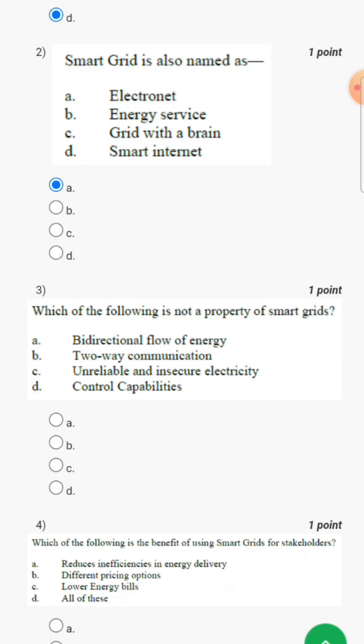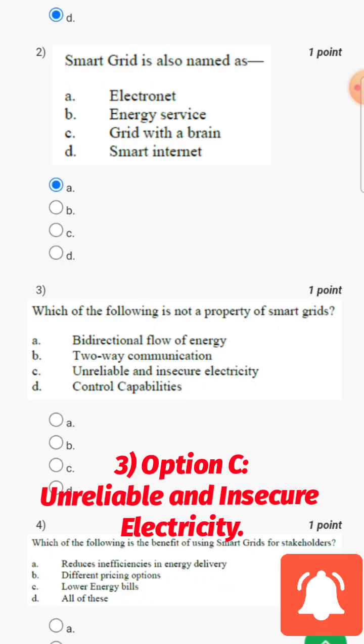Which one of the following is not a property of smart grids? So here answer will be unreliable and insecure electricity, option C.